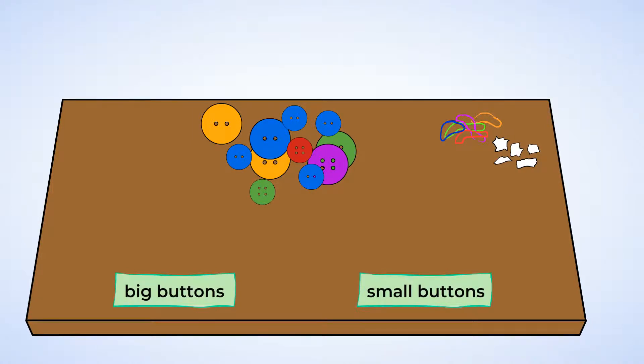Oh no, all of her buttons are in the same pile right now. I bet we could help Sue sort the buttons into two piles. One pile of big buttons and one pile of small buttons. Okay, let's start with one of the buttons in the front here. Is this button big or is this button small?